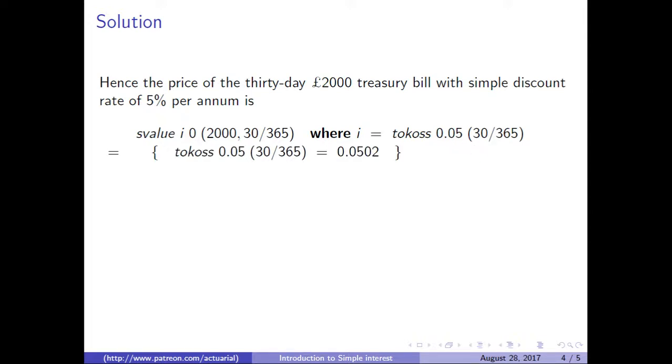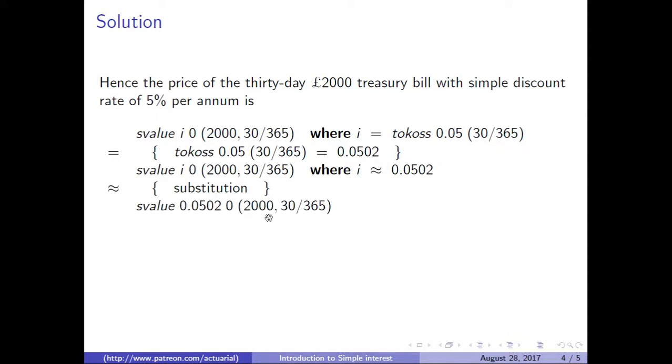Now as you saw in the last slide, that is the value of tokos. So we just substitute that back in and we get S value of 0.0502 of 0 of 2000 at 30/365.